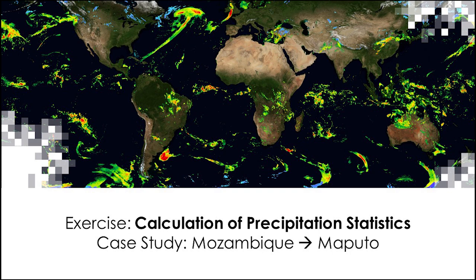We have picked a case study: the state of Texas for the regional area, and the city of Houston for local analysis, to calculate different statistical parameters using Giovanni, GIS, and Excel. Following this demonstration, you will conduct an exercise following the same procedure and steps, but focusing on the country of Mozambique and the city of Maputo. We picked these two regions because both have inter-annual variability of precipitation with dry and wet events, and both are affected by tropical cyclones and hurricanes which cause flooding in many seasons.